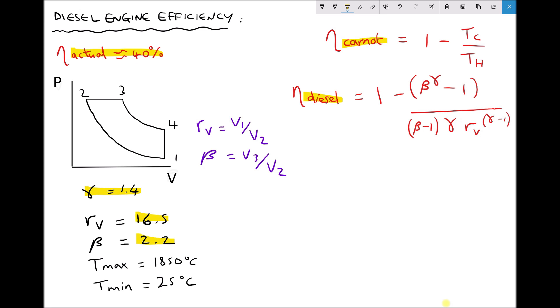We also have maximum and minimum cycle temperatures of 1850 degrees C for the air fuel mixture and 25 degrees C for the air entering the cylinder.